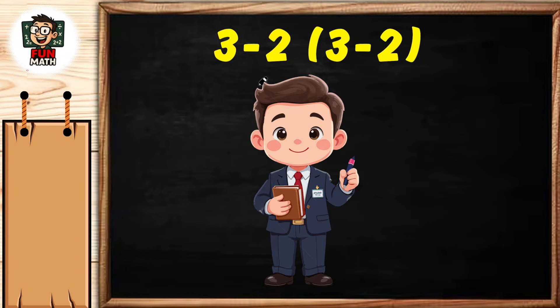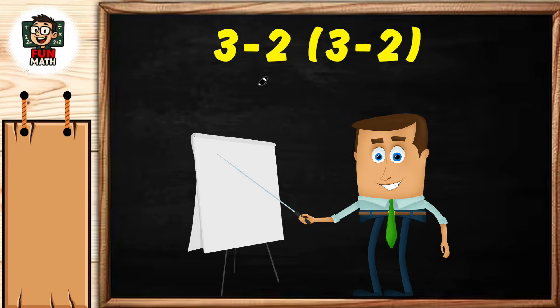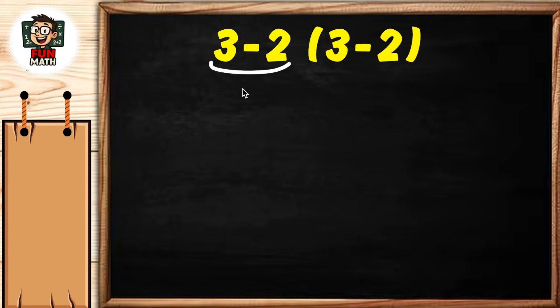Hello everyone, we are back with another good question. Let's take a quick look at our equation: 3 - 2(3 - 2). If you solve it as 3 - 2 = 1, then 1 × 1 = 1, you would get one.